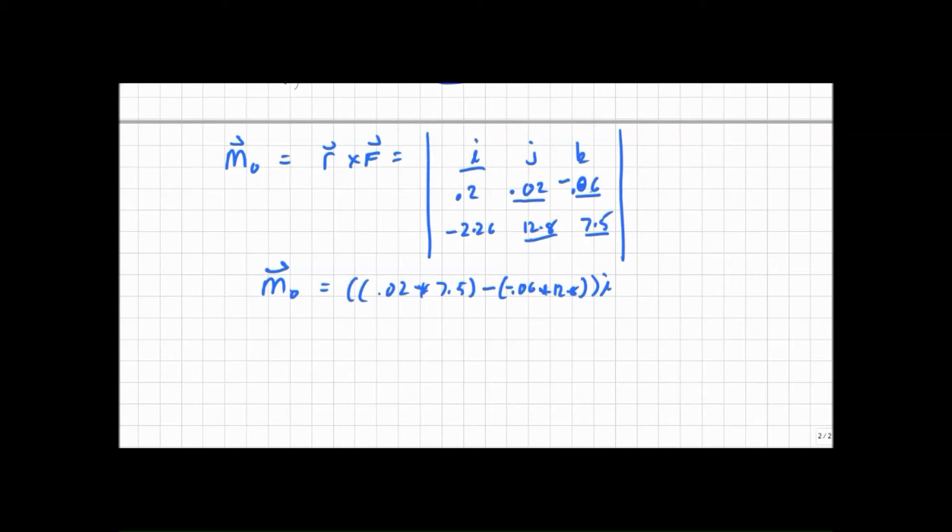So we have 0.768 i minus, the second term is negative, we change the sign, two brackets, so we're doing j.